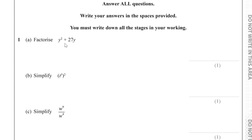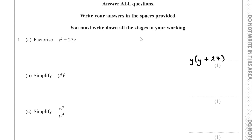For part A, we have to factorise y squared plus 27y. You'd notice what's common to both terms is y. So y goes outside the bracket. Inside the bracket, we think: what do we multiply y by to get y squared? That's just y. And what do we multiply y by to get 27y? That's just 27. So y squared plus 27y is equivalent to y(y + 27).